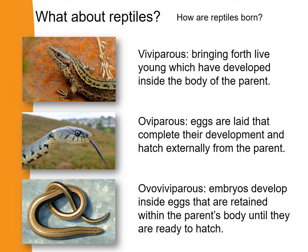The first method is viviparous, which means bringing forth live young that have developed in the body of the parent — so that's an animal that gives birth. The next is oviparous, which means eggs are laid that complete their development and hatch outside of the parent. And the third is ovoviviparous, which means the embryos develop inside eggs, but those eggs stay inside the body of the parent, and the young hatch inside and then leave the parent's body.